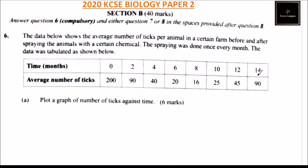At 14 months the number increased again from 45 to 90.